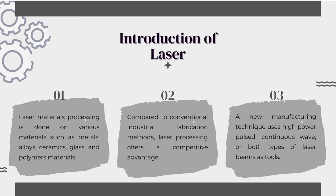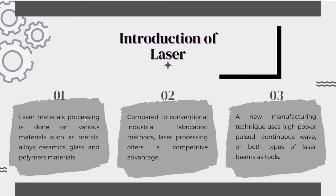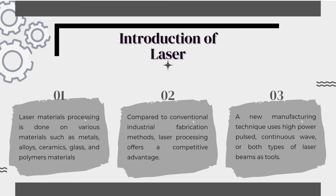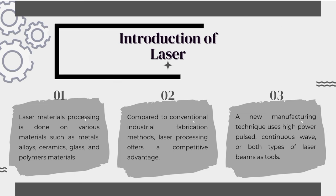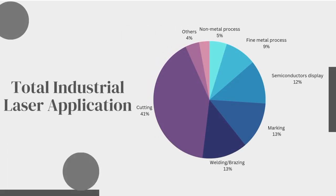Introduction of laser. Laser materials processing is done on various materials such as metals, alloys, ceramics, glass, and polymers. Compared to conventional industrial fabrication methods, laser processing offers a competitive advantage. New manufacturing techniques use high-power pulsed, continuous wave, or both types of laser beams as tools. Total industrial laser applications: cutting has 41%, welding or brazing 13%, marking 13%, semiconductor display 12%, fine metal process 9%, non-metal process 5%, additive manufacturing 3%, and other applications 4%.